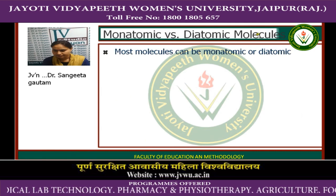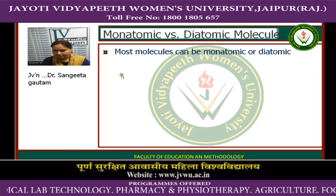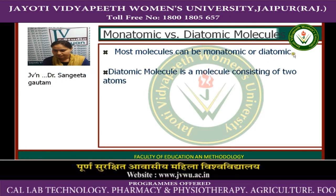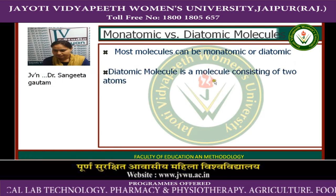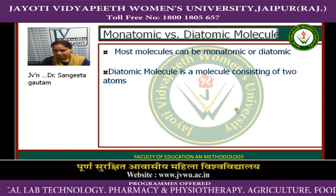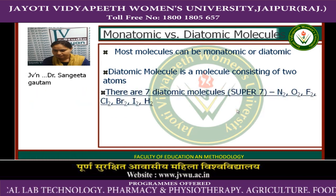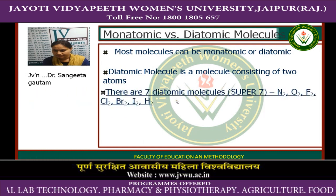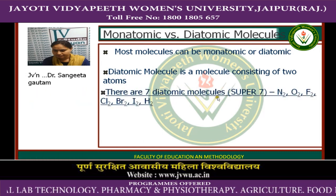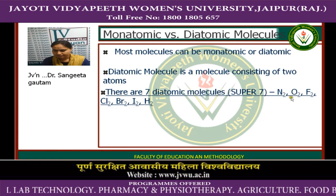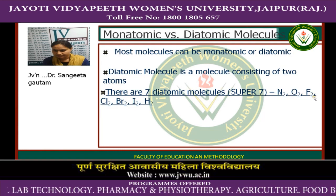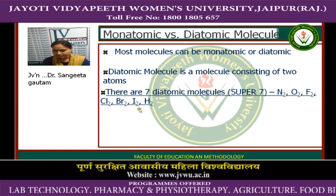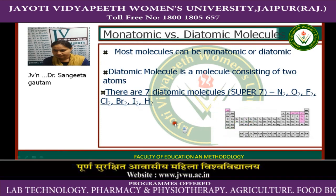Monoatomic and diatomic molecules: most molecules can be monoatomic or diatomic. A diatomic molecule consists of two atoms. There are seven diatomic molecules, called the super 7: N₂, O₂, F₂, Cl₂, Br₂, I₂, and H₂.